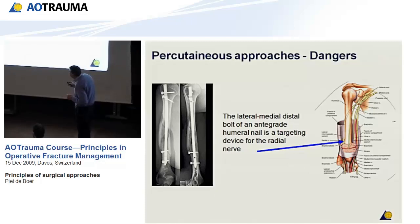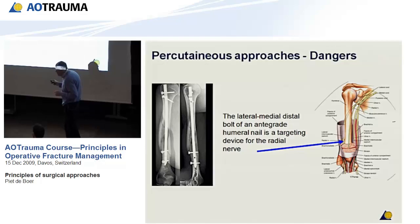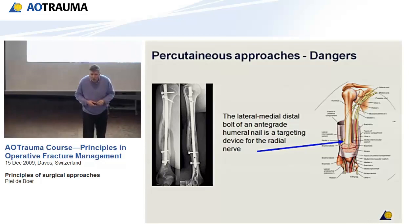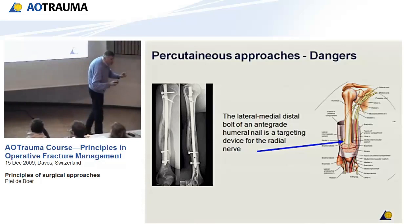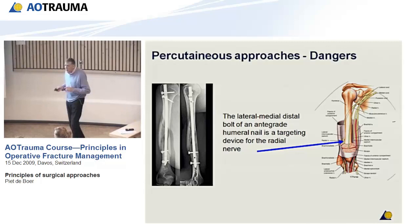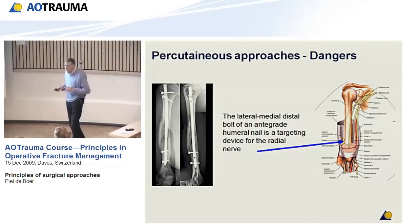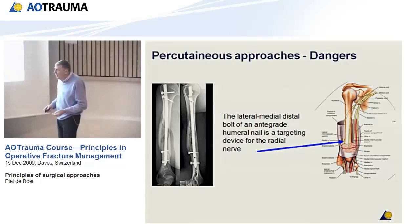What would you call this? It's a lateral-to-medial distal locking screw — you're wrong. It's a targeting device for the radial nerve. I promise you, you will be within 8 millimeters of the radial nerve if you put this in blind. So basically, either do this by dissection, or use the AP hole, which is a lot safer. The problem with percutaneous approaches are the dangers, and your need to know anatomy is actually greater when using these approaches.